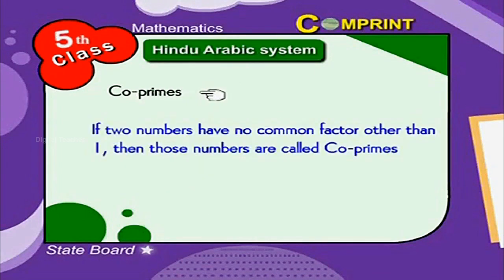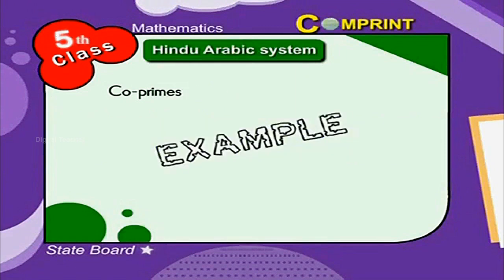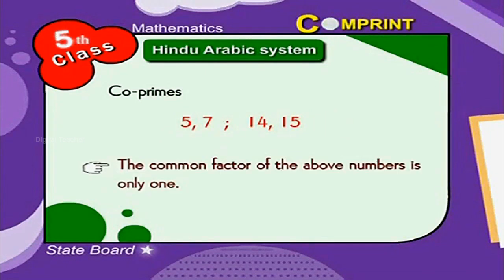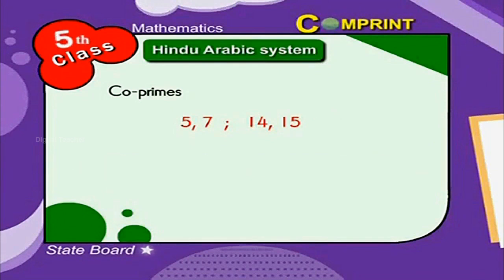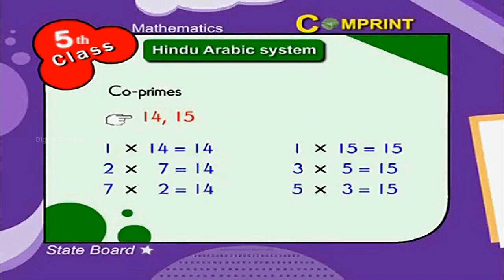Coprimes: if two numbers have no common factor other than 1, then those numbers are called coprime numbers. For example, 5, 7, 14, and 15 — the common factor of these numbers is only 1. Look at 14 and 15: the common factor is 1.